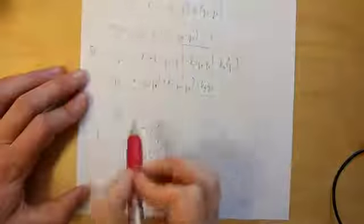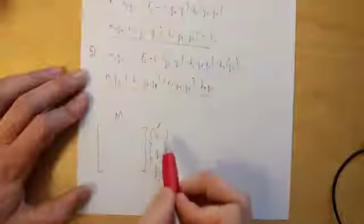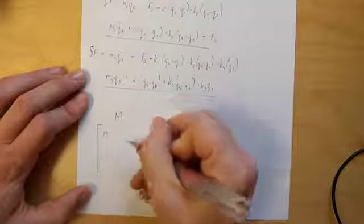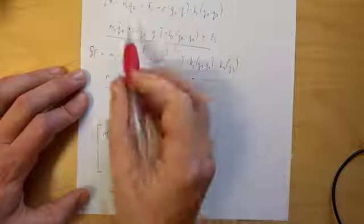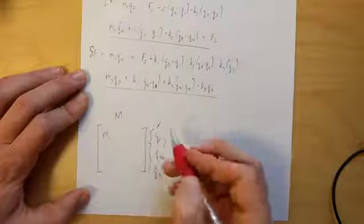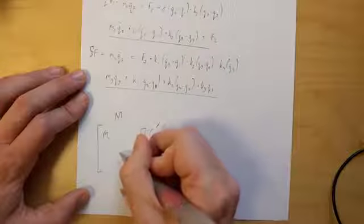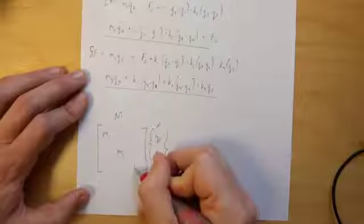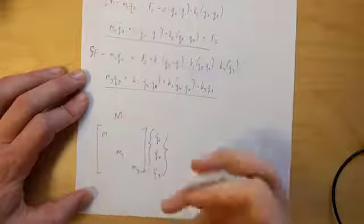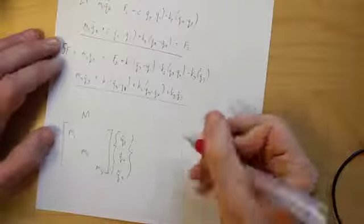Mass matrix is easy. It's going to be everything from our first equation on the first row, so the only mass we have multiplied times Q1 is M1, everything else is 0. Second equation of motion, M2 is the only thing that appears times Q2, and then M3 from the third equation.